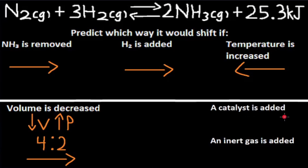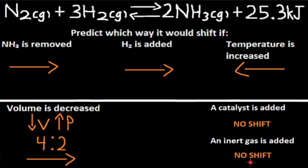If a catalyst is added, there will be no shift. This is because a catalyst only speeds up the reaction and it doesn't change the concentration of the reactants or the products. Similarly, if an inert gas is added, there would be no shift, because an inert gas is not involved in the reaction.